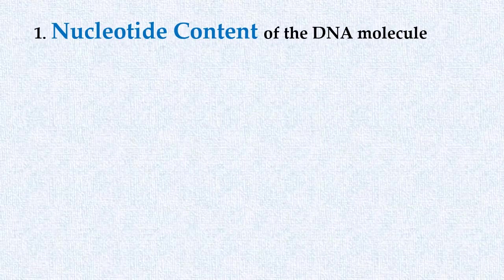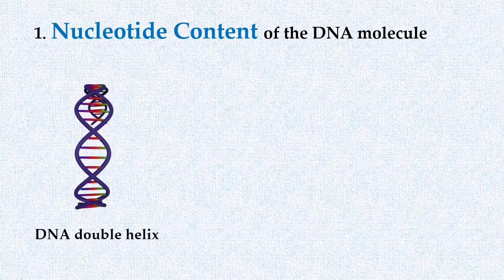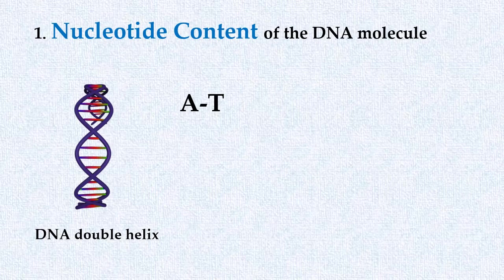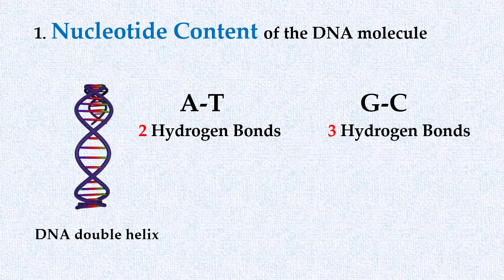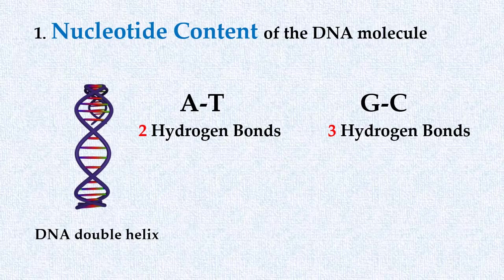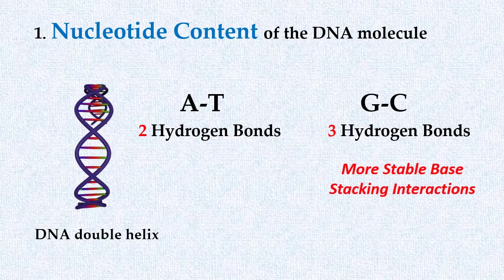We know that in DNA double helix, adenine always pairs with thymine by two hydrogen bonds, and guanine always pairs with cytosine by three hydrogen bonds. Moreover, the base stacking interactions in case of guanine-cytosine pair are more stable.